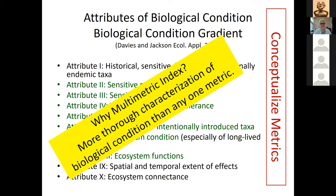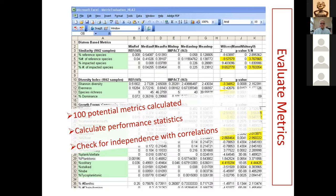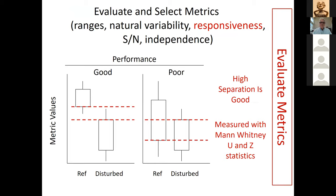After conceptualizing what to measure, we calculated over 100 potential metrics, characterized performance statistics, checked for independence, and selected the best metrics. One performance attribute we examined was simply: do they clearly distinguish between reference and disturbed lakes? We measured responsiveness with the Mann-Whitney U or Z-statistics to distinguish between reference and disturbed conditions.